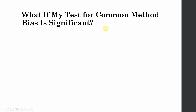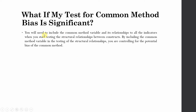Since the common method bias test is significant, you will need to include the common method variable and its relationships to all indicators when testing structural relationships between constructs. By including the common method variable in the structural analysis, you are controlling for potential common method bias.